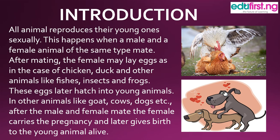While some animals like dog, goat, cows, and other animals like that reproduce their younger ones at the birth process. After the male and female mate together, the female carries the pregnancy and later gives birth to the younger animals alive. They carry the pregnancy for a stipulated period — like our mummies at home, who carry for nine months before they reproduce another baby. These animals too have a stipulated time of carrying their pregnancy before they give birth.